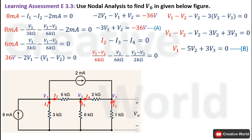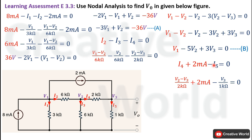Moving to the last node of the network: two currents are entering — I4 and 2 mA — and one current is leaving, I5. Current I4 is V2 minus V3 divided by 2 kΩ, and current I5 equals the voltage across the 1 kΩ resistance (V3) divided by 1 kΩ. The KCL equation is modified by replacing these currents with their respective expressions.